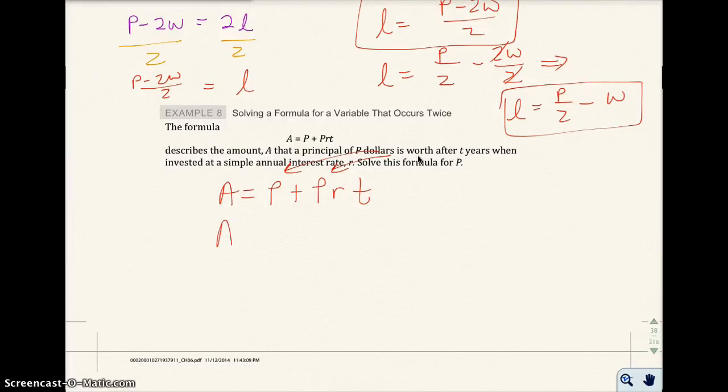So what we want to do, we want to make this formula easier to solve for P. Well, what we can do is we can look at what we did in the previous chapter, and we can actually factor out that P, and pull the P out of both terms. I get 1 plus RT. I pull P out of here, I have 1 left. I pull P out of here, I have RT left. And if you don't believe me, just do the distributive property. You should get that back. P times 1 is P. P times RT is PRT.